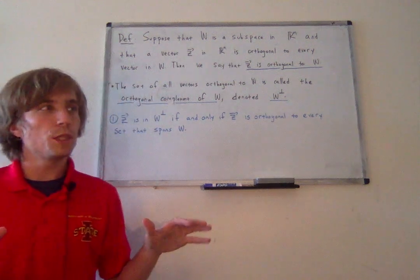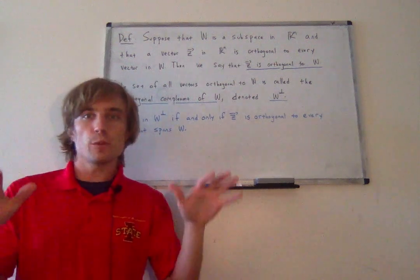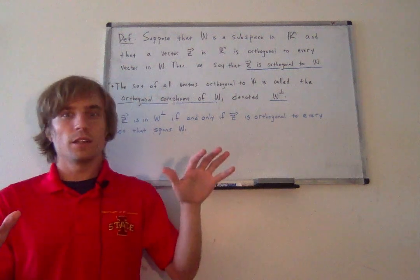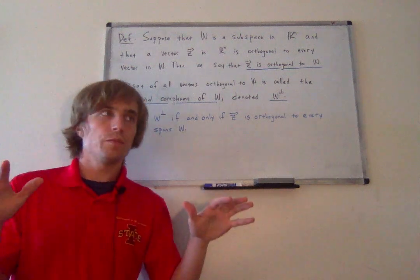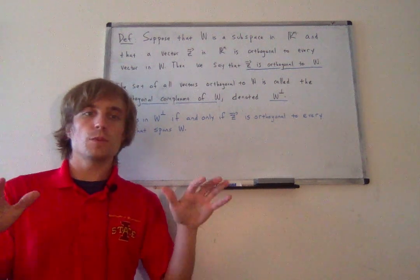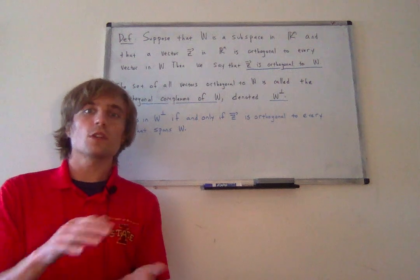In this way, w and w perp kind of complement each other — you can sort of think of them as being like two sides of a coin.